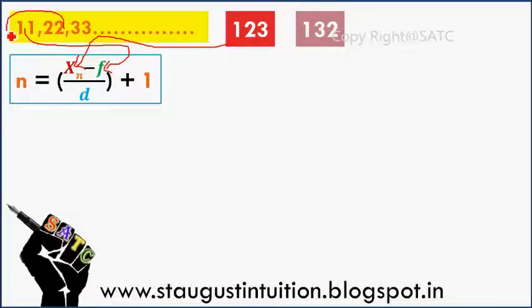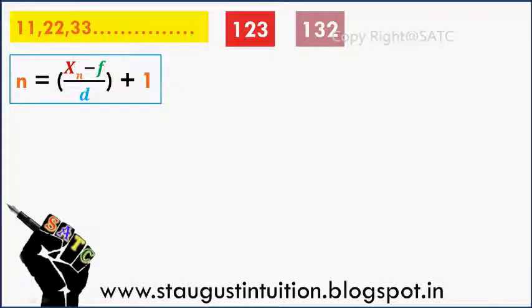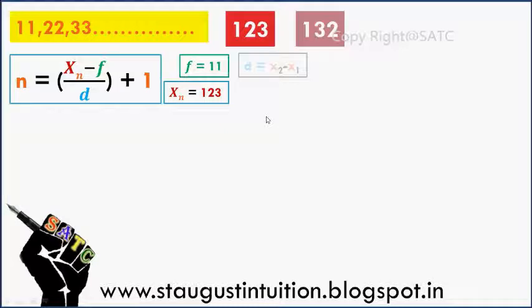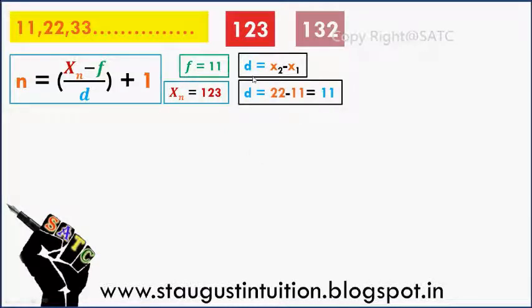f is the first term, and d is the common difference. The common difference is x2 minus x1. Here d is 3 minus 2, then e plus 3 minus 11. The first term is 11.